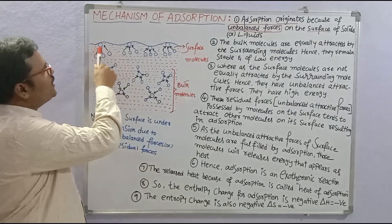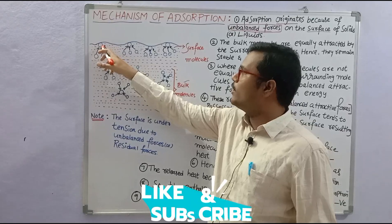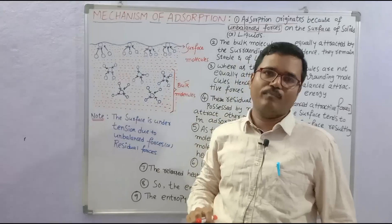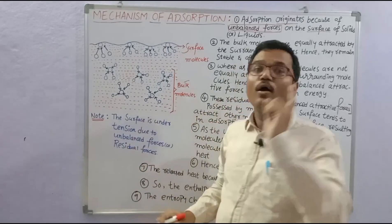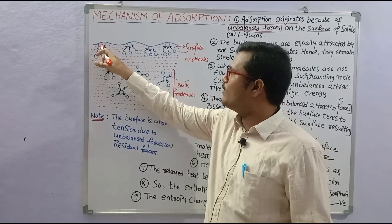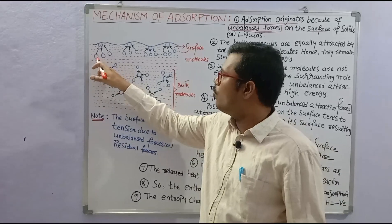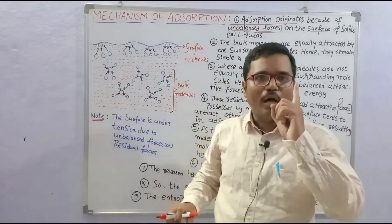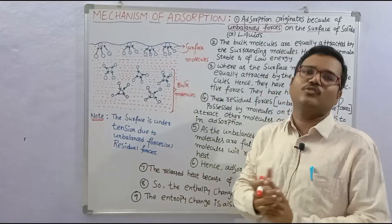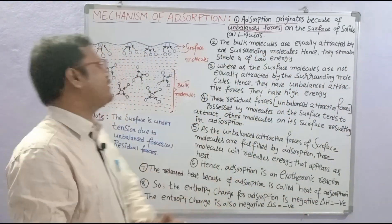Now look at the diagram. At the surface, the molecule which is present at the surface is attracted by only 3 molecules. So here, one molecule's attraction force is unbalanced. A surface molecule is attracted by only 3 molecules, whereas in the bulk it should be attracted by 4. So one attraction force is not balanced at the surface.